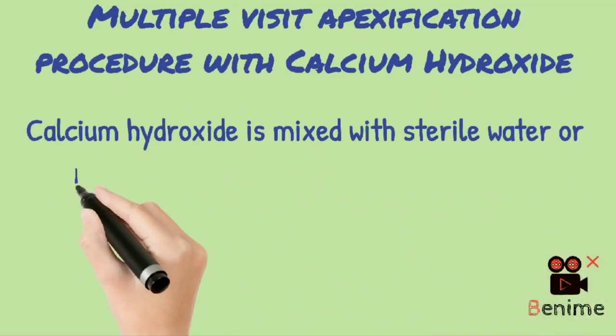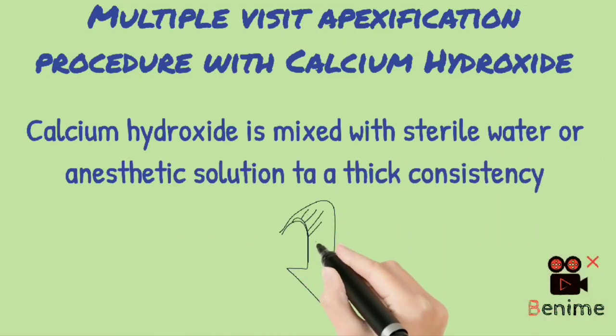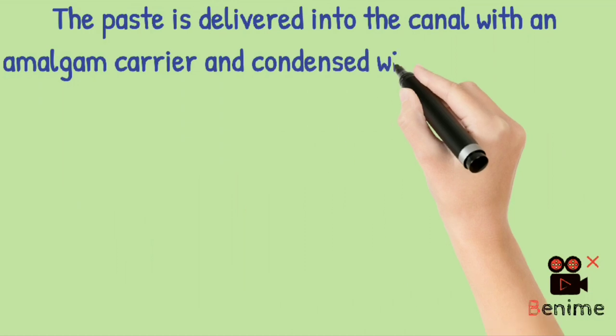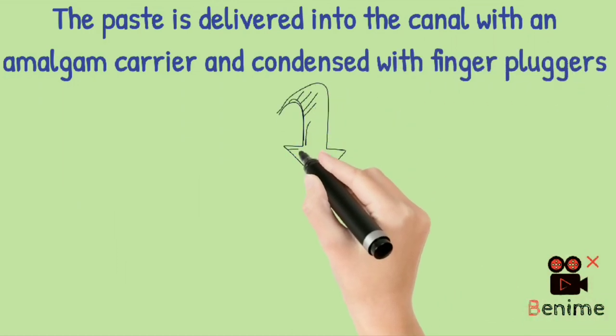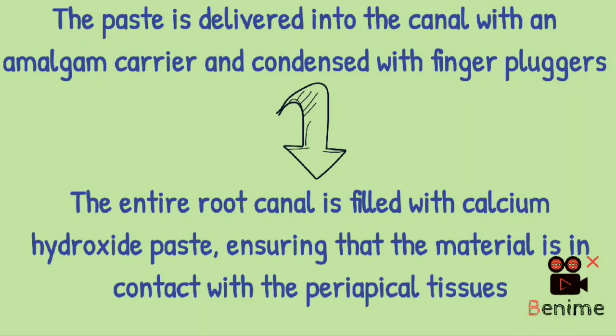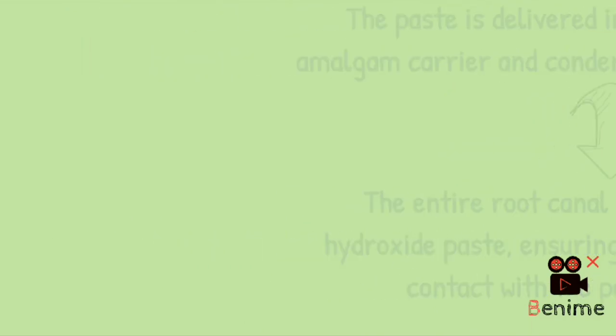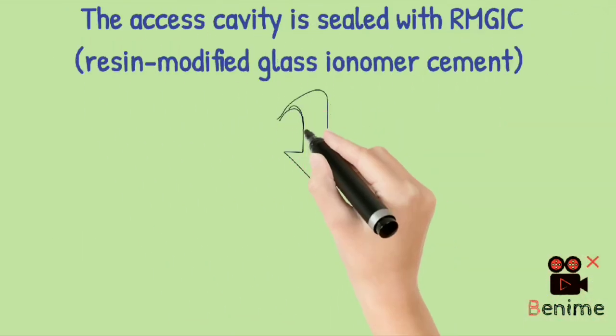Now the other procedure is multiple step apexification with calcium hydroxide. Calcium hydroxide is the most common and traditional material employed for inducing apexification. However, this technique is typically a multiple visit approach which takes a period of 6 months to 4 years to complete. Mix calcium hydroxide with sterile water in a thick consistency or with an anesthetic solution. Then using an amalgam carrier, deliver the paste into the canal and condense it with finger pluggers. After that, fill the entire root canal with calcium hydroxide paste, and you should ensure that the material is in contact with the periapical tissue. Then seal the access cavity with resin modified GIC.